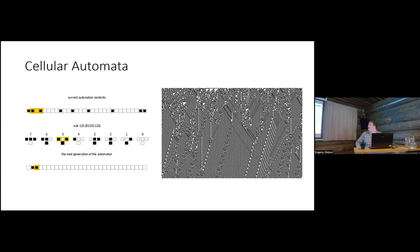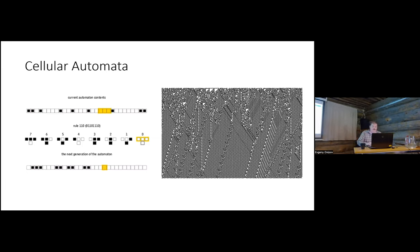Rule 110 is apparently Turing complete because someone has proven you can embed a Turing machine in it. Of course we can ask whether Turing completeness is really a good measure of how powerful a system is, since this is a completely parallel system. It would be interesting to get better measures for parallel systems, but that's not what this talk is about.